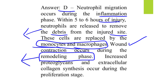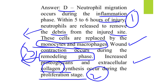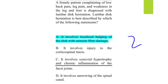Increase in proteoglycans and extracellular collagen occurs during the proliferation phase, which is the second stage. To summarize: neutrophil migration occurs in the inflammation phase, wound contraction in the remodeling phase, and increased proteoglycans and extracellular collagen in the proliferation phase.